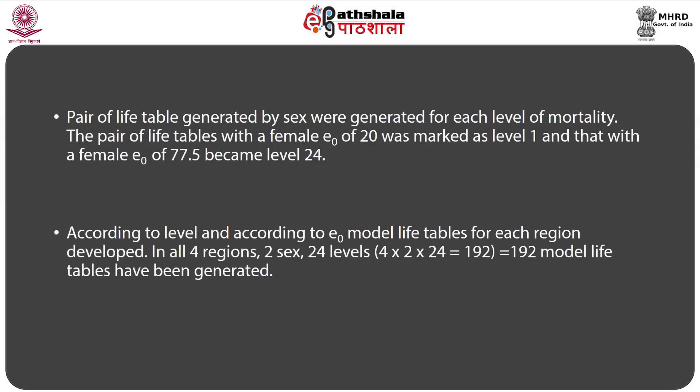Pairs of life tables by sex were generated for each level of mortality. The pair with a female e0 of 20 was marked as level 1, and that with a female e0 of 77.5 became level 24. Model life tables were developed for each region according to level and e0. In all: 4 regions × 2 sexes × 24 levels = 192 model life tables were generated.